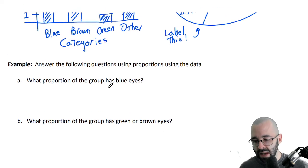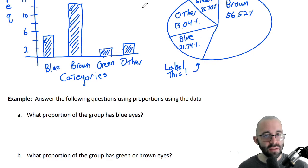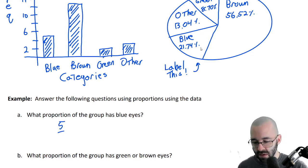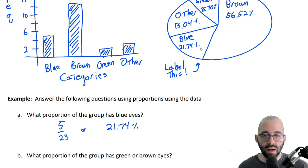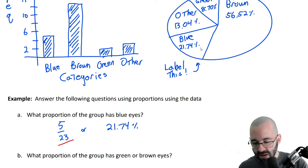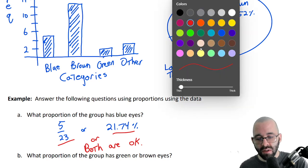Let's do an example to answer some questions. What proportion of the group has blue eyes? We can look at our pie chart or the frequency table. The proportion that has blue eyes was 5 out of 23, or about 21.74%. You can answer in either fraction or percent form — I'll accept either.